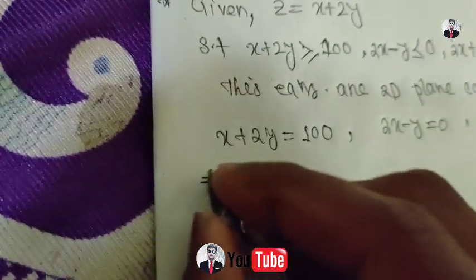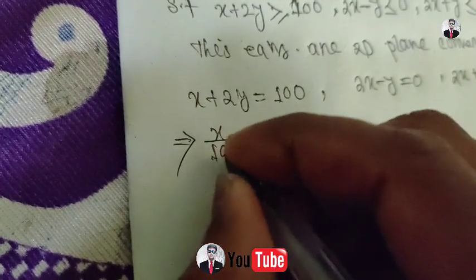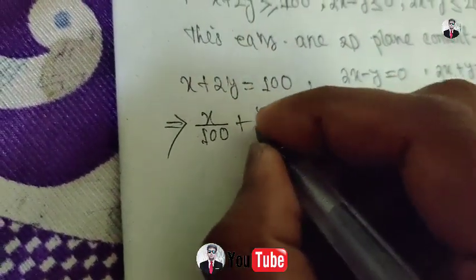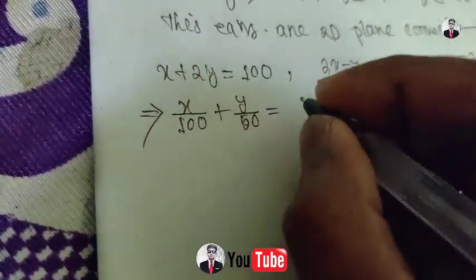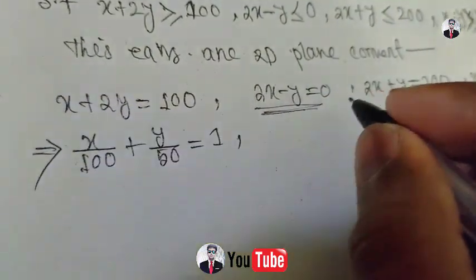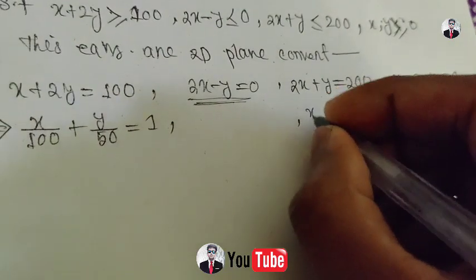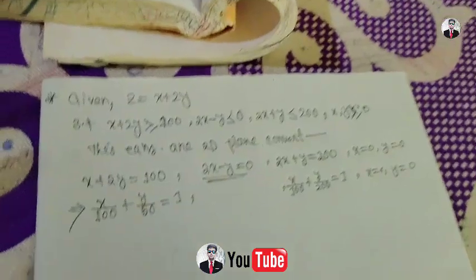For the equation x plus 2y equal to 100, when x equals 100, y equals zero, and when y equals 50, x equals zero. So the intercepts are (100, 0) and (0, 50). For twice x plus y equal to 200, the intercepts give x by 100 plus y by 200 equals one. With x equal to zero and y equal to zero as boundary conditions.